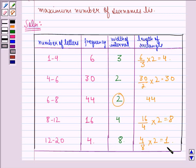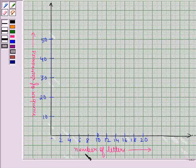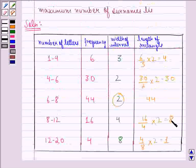Now with this table let us draw a histogram. On the x-axis we have taken the number of letters and on the y-axis we have taken number of surnames. So let us draw the histogram with this information where number of letters will be this and length of rectangle will be this.